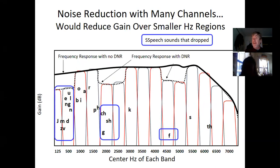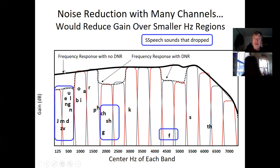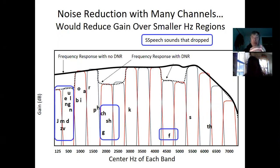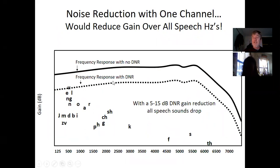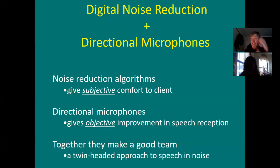With multi-channel DNR, the steady-state noise is picked up in specific channels and gain is reduced in those narrow frequency slivers. You're removing less of the baby with the bathwater, but still — any speech in those channels is also reduced along with the noise. So you're removing less speech, but it's still somewhat counterproductive. The final summary: digital noise reduction gives subjective comfort; directional mics give objective SNR improvement.